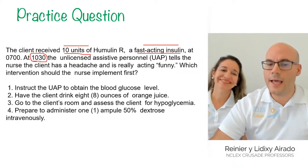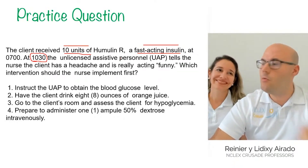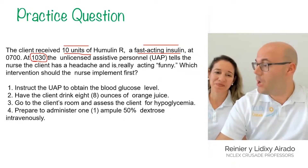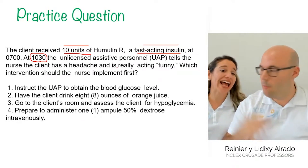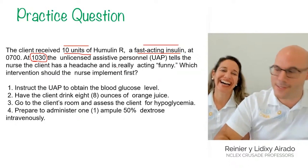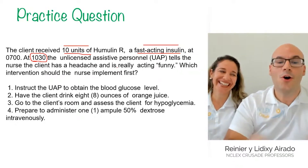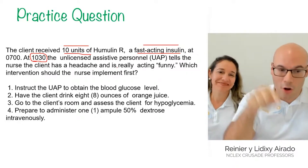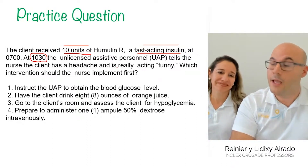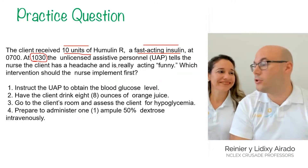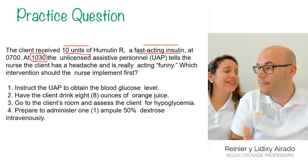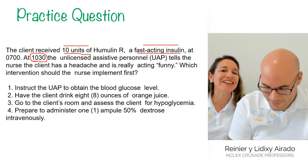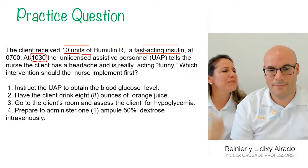Option 1 says: instruct the UAP to obtain the blood glucose level. This is appealing because it would give an objective value about what is happening. Many chose option 1 thinking it would provide objective data about the patient's condition, which is correct — we don't have objective data yet. The patient has a headache and is acting funny, but 'acting funny' is not a clear objective finding.